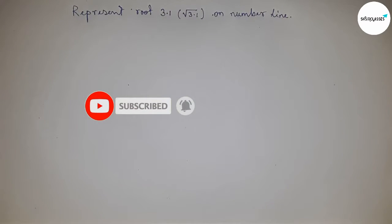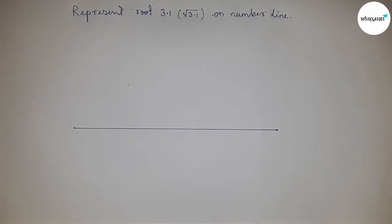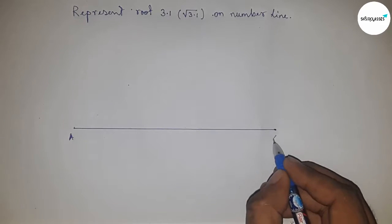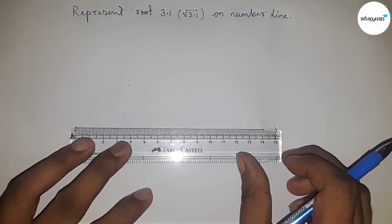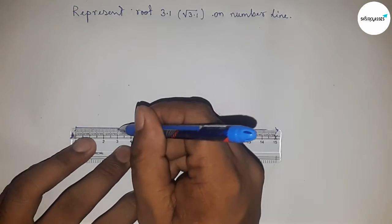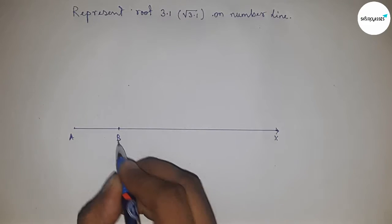First of all, draw a line of any length. This is the AX line. Next, take a distance of 3.1 centimeters and mark this as point B, so AB equals 3.1 centimeters.